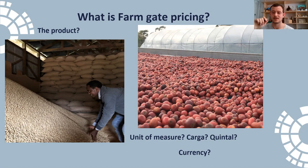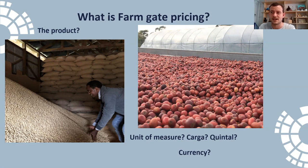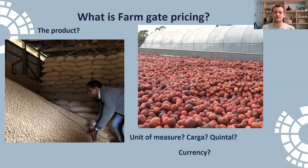If we're reporting on information we need to be able to understand that information. I recently read a very interesting article about sustainability and reporting — it's very good to report, but you need to make sure that what you're reporting is clear so people can actually understand it. So in this farm gate price we've got the product, the unit of measure, and the currency — that should be everything we need to take into account regarding farm gate pricing.